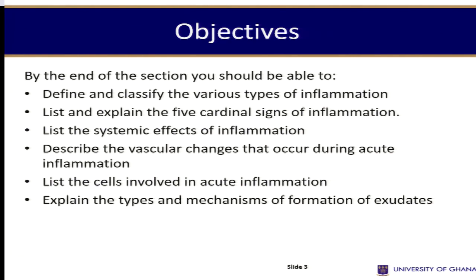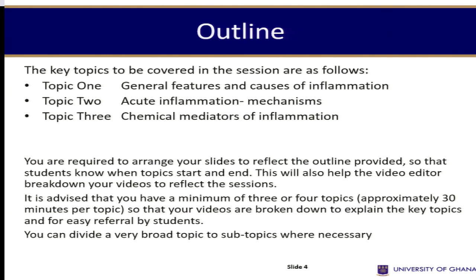At the end of the session, you should be able to define and classify various types of inflammation, list and explain the five cardinal signs of inflammation, list the systemic effects, describe the changes in inflammation and cells involved, and explain the types and mechanisms of formation of exudates. We are going to deal with this session under three topics: general features of acute inflammation and its causes, acute inflammatory mechanisms, and then the chemical mediators of inflammation.